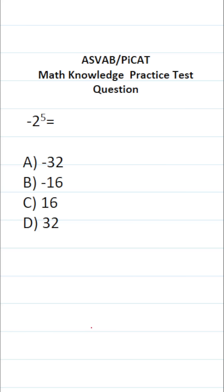This math knowledge practice test question for the ASVAB and PiCAT says negative two to the fifth power equals. Right off the bat, I want to say this. If you don't pay close attention to this negative sign, you're going to get this question wrong because I'm going to rewrite this one to make it very clear.